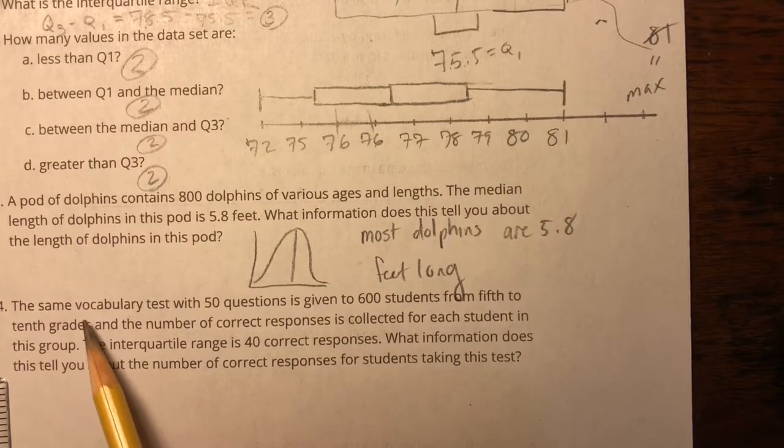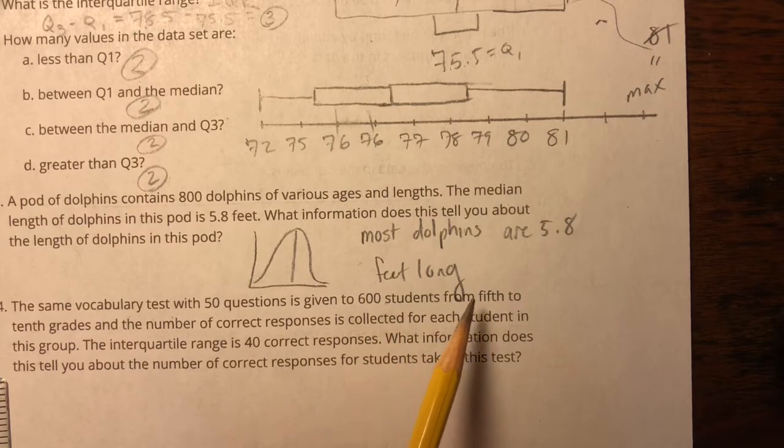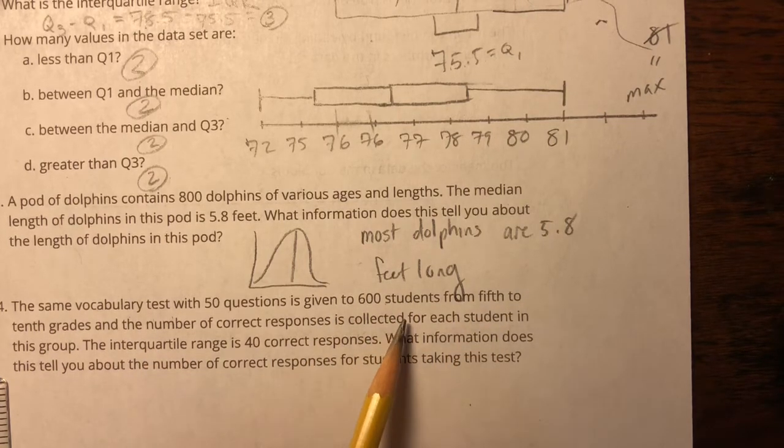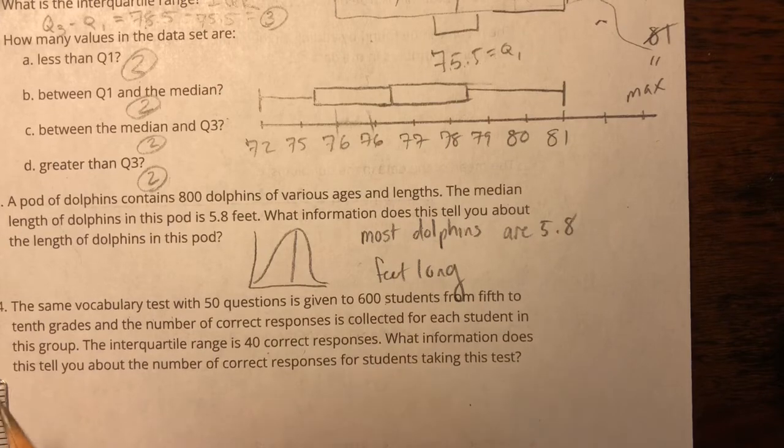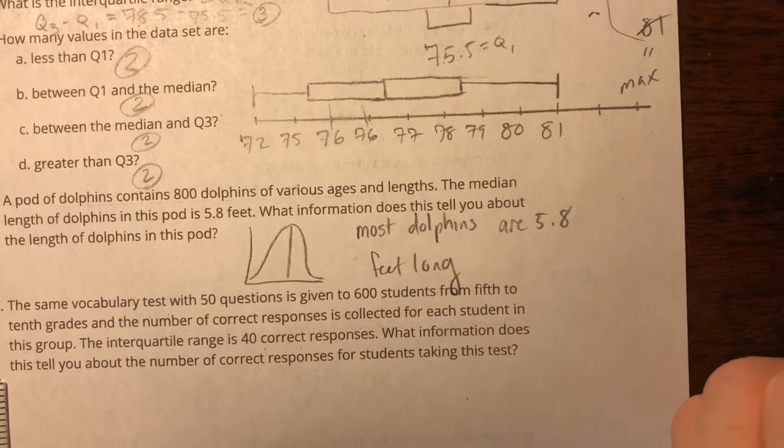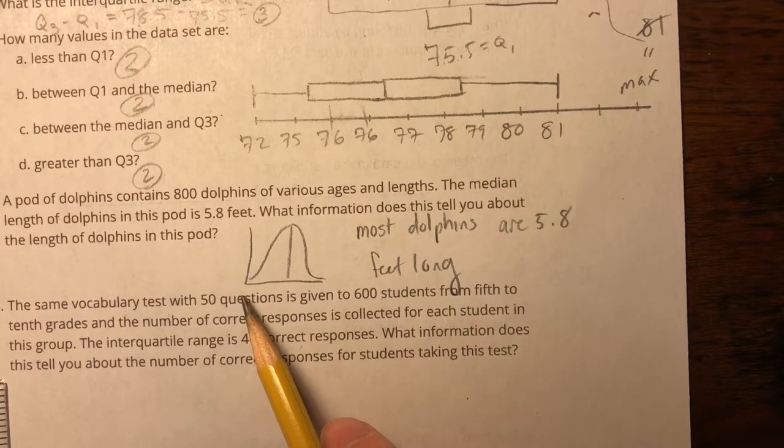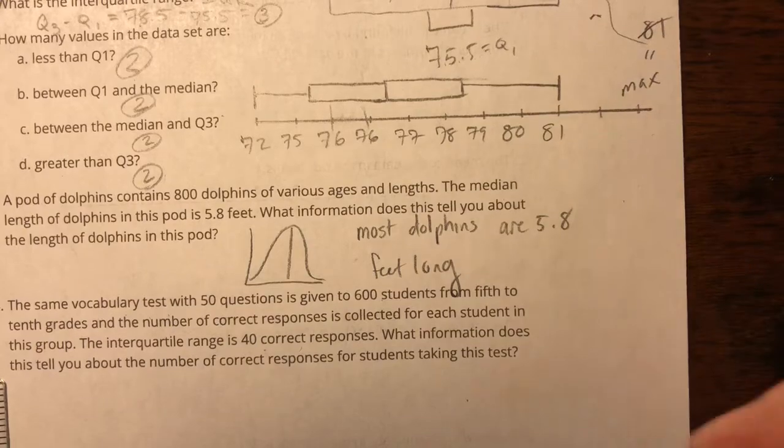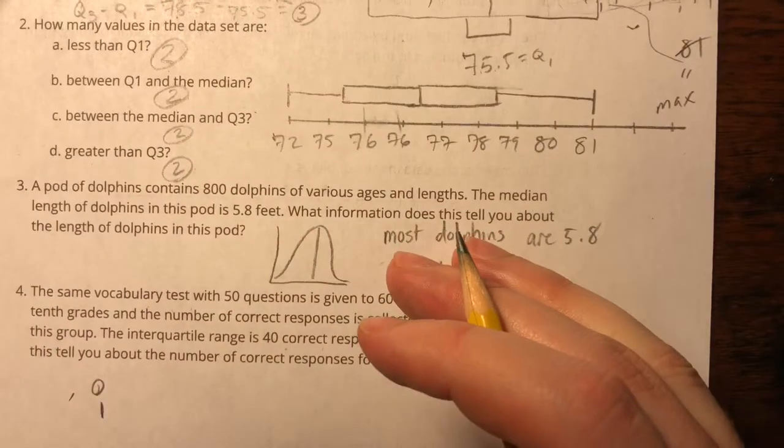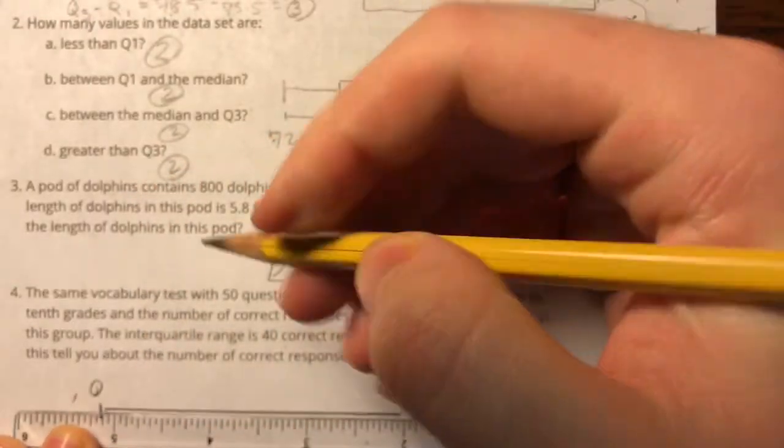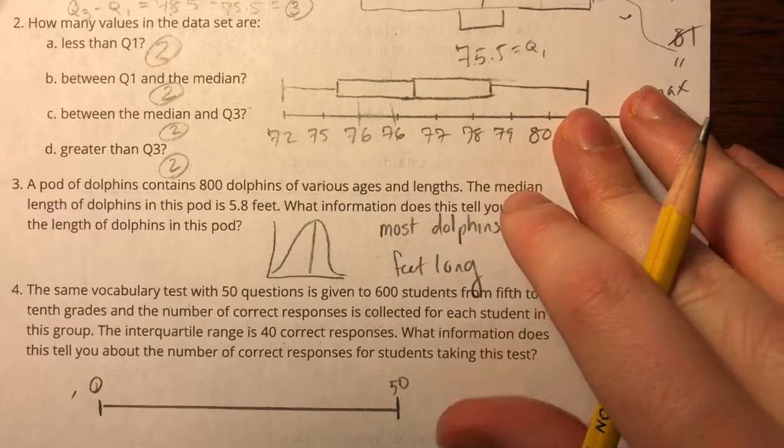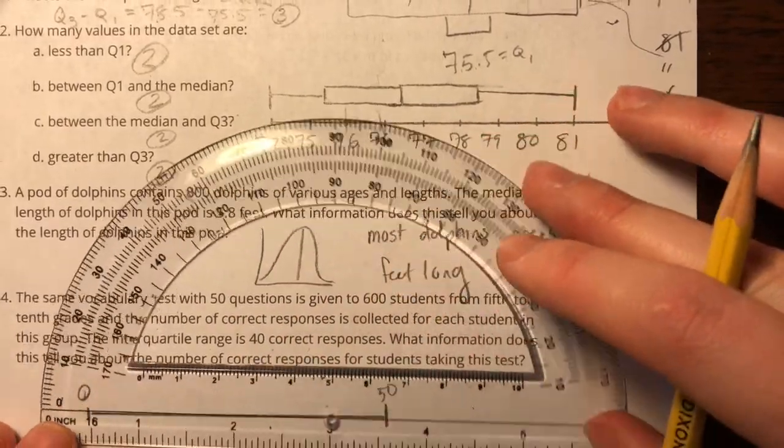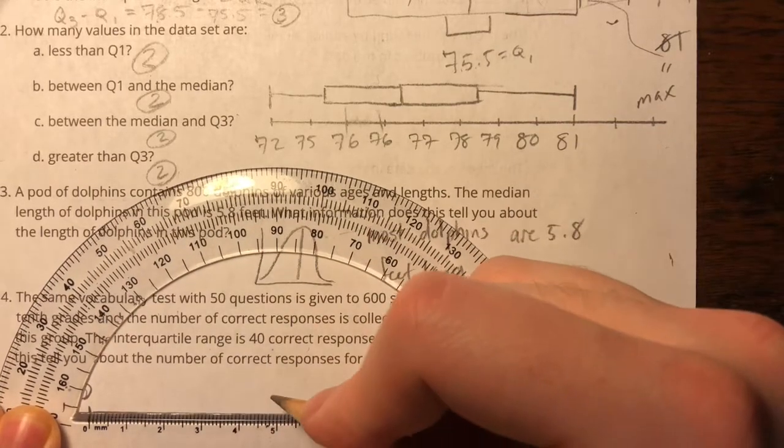All right. Number four, the same vocabulary test with 50 questions is given to 600 students from 5th to 10th grades. And the number of correct responses is collected for each student in this group. The interquartile range is 40 correct responses. What information does this tell you about the number correct responses for students taking this test? So let's think about what the possibilities are, right? If you're taking a vocabulary test with 50 questions, what's the lowest score you could get? Well, I guess the lowest score you could get would be a zero.